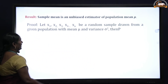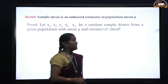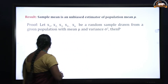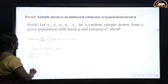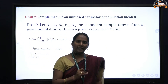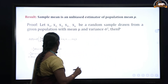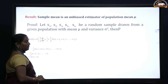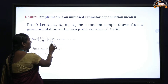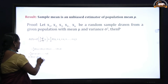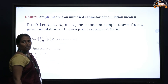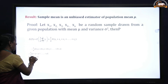Now let us see the proof. When x1 to xn are n random observations drawn from a population with mean mu and variance sigma squared, we find expectation of x bar. Since x bar equals summation x by n, we write E(x bar) = (1/n) * E(x1 + x2 + ... + xn) = (1/n) * [E(x1) + E(x2) + ... + E(xn)]. We know E(x) = mu.